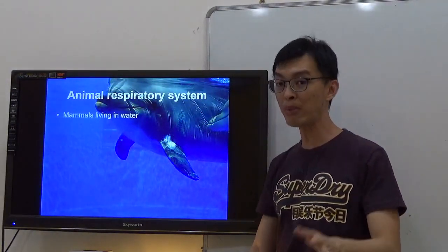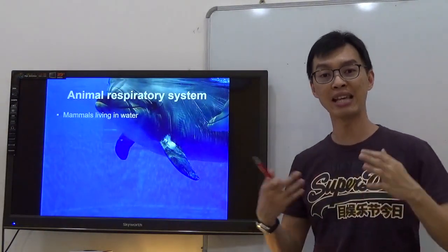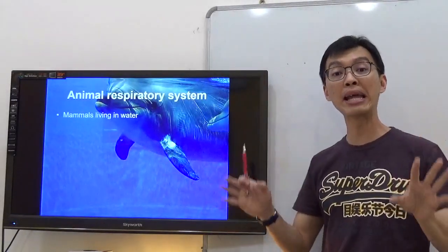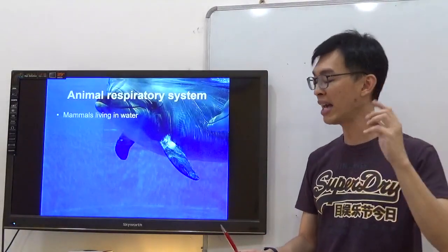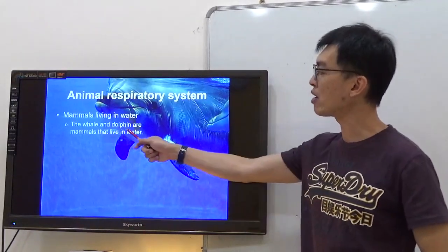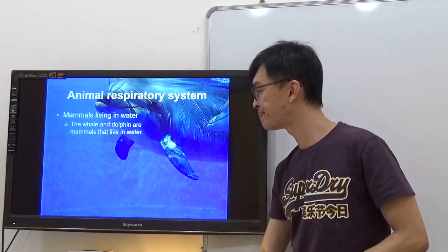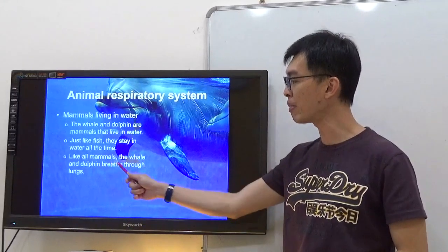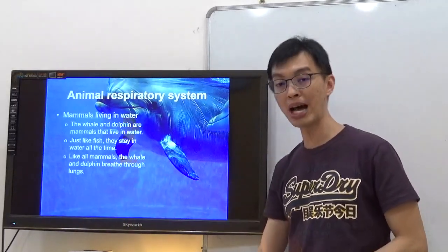Let's talk about some mammals that live in water. They have lungs. Take note: dolphins and whales have lungs. But they have something called a blowhole. Whales and dolphins are mammals that live in water. Just like fish, they stay in water all the time. Like all mammals, whales and dolphins breathe through lungs.